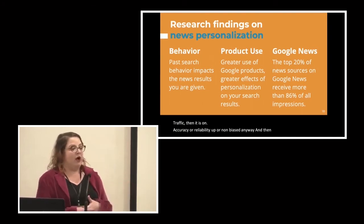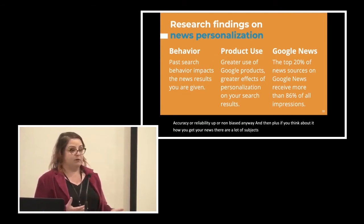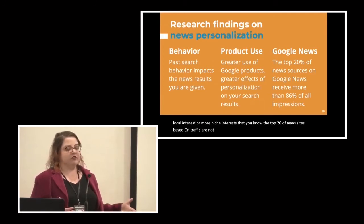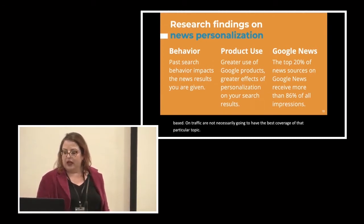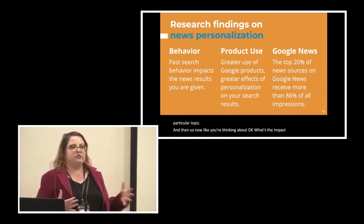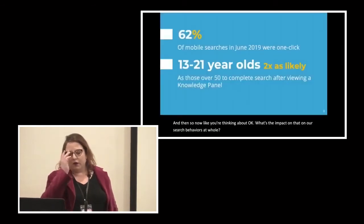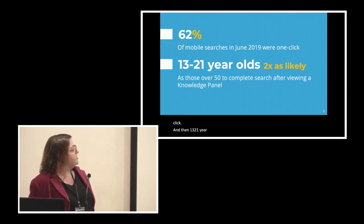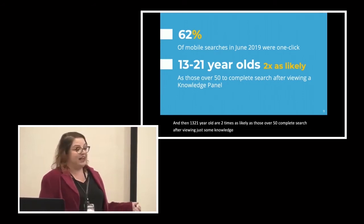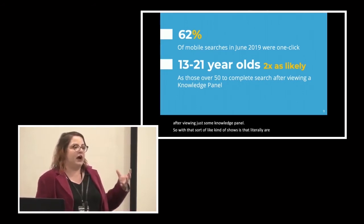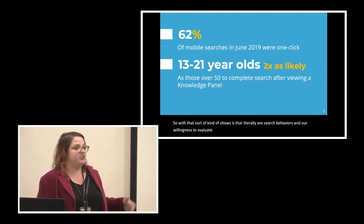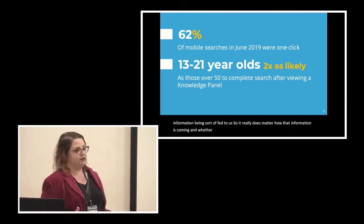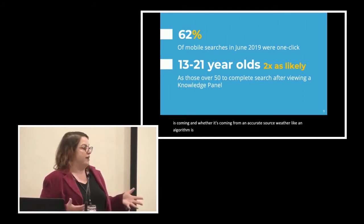That top 20% won't necessarily have the best coverage of local or niche topics. And thinking about impact on search behavior overall: a recent study shows 62% of mobile searches in June 2019 were one-click, and 13-to-21-year-olds are twice as likely as those over 50 to complete a search after viewing just a knowledge panel. This shows our search behaviors and our willingness to evaluate information are being changed by information being fed to us — so it really matters whether that information is coming from an accurate, reliable source.